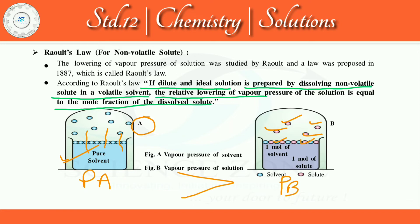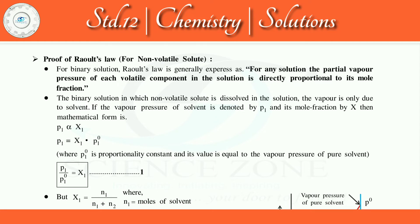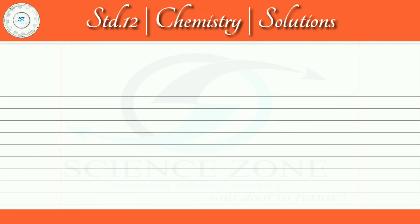Raoult's statement is: for any solution, the partial vapor pressure of each volatile component is directly proportional to its mole fraction. The vapor pressure of a solution depends on the mole fraction of the volatile solvent. We use mole fraction because this is a colligative property that depends on number of particles. Throughout this chapter, solvent expressions will use subscript 1 and solute expressions will use subscript 2.